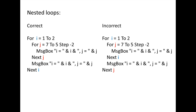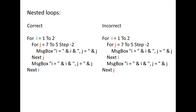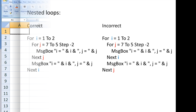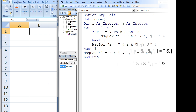Let's execute the nested loop on the left and observe the output. When we execute this code, seven message boxes appear.